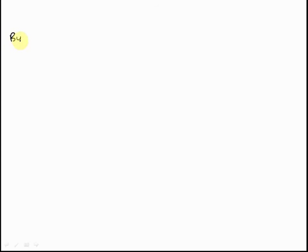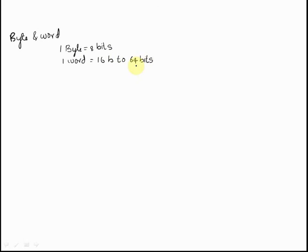First we will study what is meant by byte addressable and word addressable memories. Generally, one byte is equal to eight bits, and one word ranges from 16 bits to 64 bits. This is because the architecture varies from processor to processor and there is no standard size for a word. If we have an address space to identify each word, then it is known as word addressable memory.